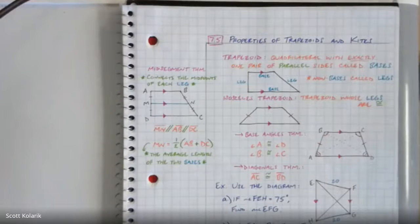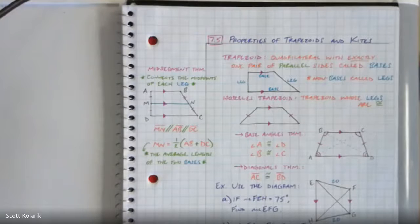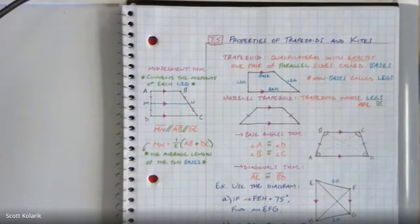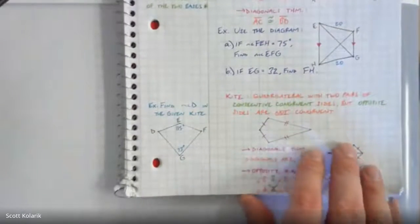Chapter 7, Section 5: Properties of Trapezoids and Kites — this is Part 2 of 2. In this section we're exploring the properties of trapezoids and kites. In Part 1 we explored trapezoids. Today we're going to focus on kites, a shape we'll all be very familiar with — as soon as you see the figure you'll understand why it's called a kite.